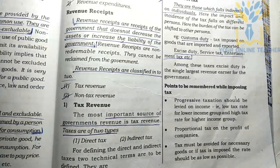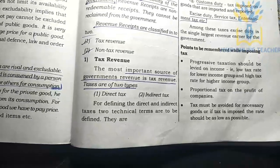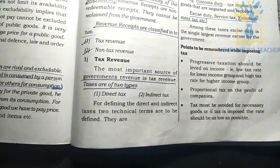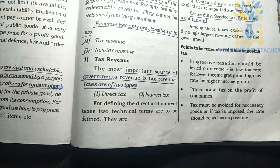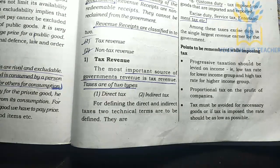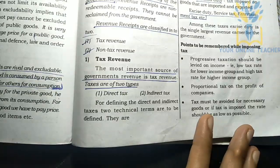There is also proportional tax on companies. The amount of tax paid is proportional to company income or profits.